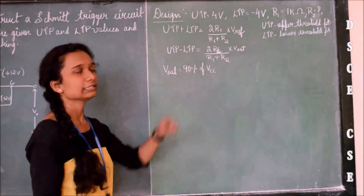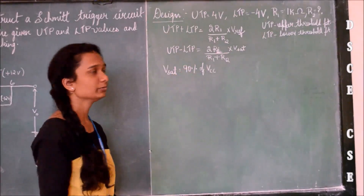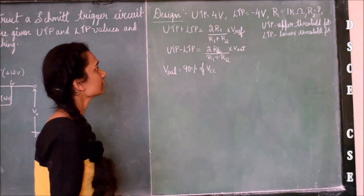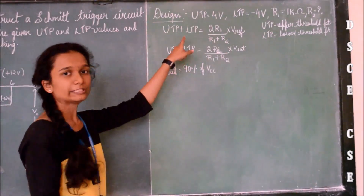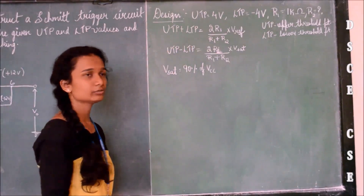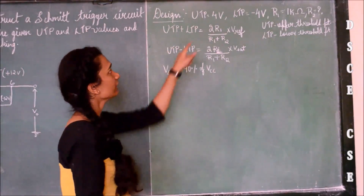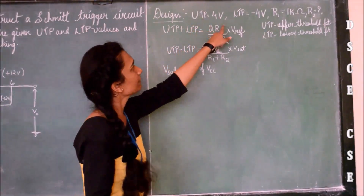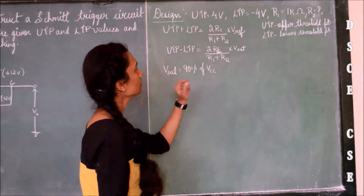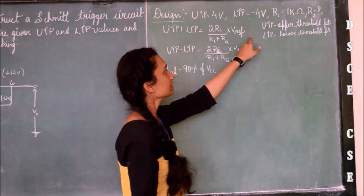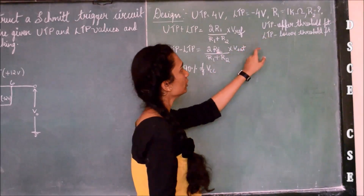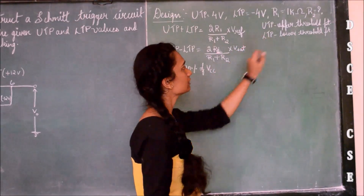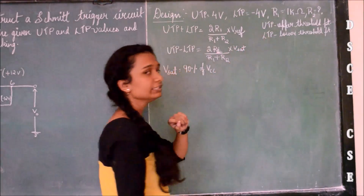Now let us calculate the value of R2 and V reference. The UTP and LTP values are given, where UTP is 4 volts and LTP is minus 4 volts. UTP is the upper threshold point and LTP is the lower threshold point.